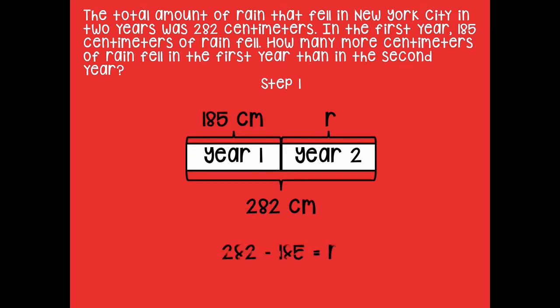Here's what I came up with: 282 minus 185 equals R. When I know the whole and I know one of the parts, I'm going to subtract to find the other part. Pause the video, solve this part of the problem, and click play when you're ready to go over it together.